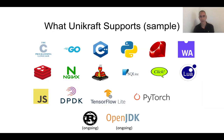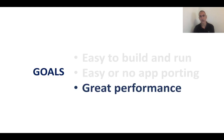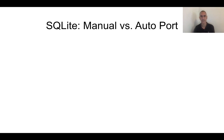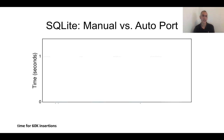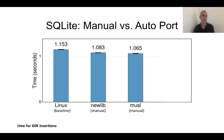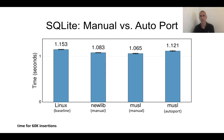We support multiple programming languages and environments, and applications like SQLite, Redis, Nginx, and frameworks such as TensorFlow Lite. The final goal is to provide great performance. First we want to answer: if we're doing auto porting and compatibility, are we sacrificing performance? To test this, we compared a manual port of SQLite versus the automatically ported version, measuring the time to do 60,000 insertions. As a baseline, Linux takes about a second. The manually ported versions on top of NewLib and Musl also take about a second. The important result is the auto ported version on top of Musl — the good news is that auto porting doesn't negatively affect performance.